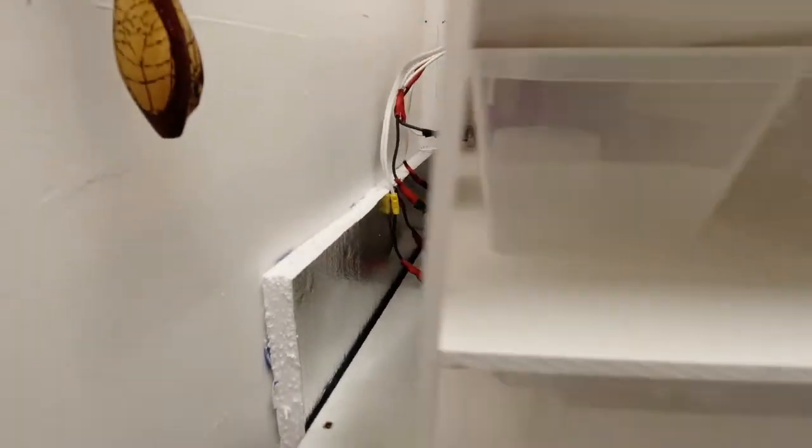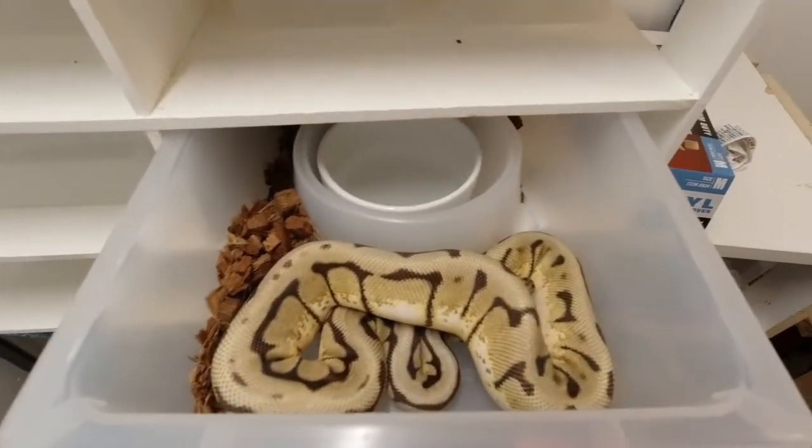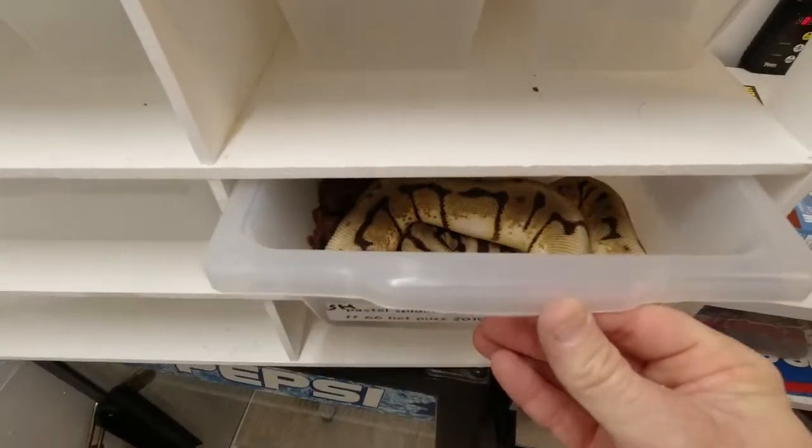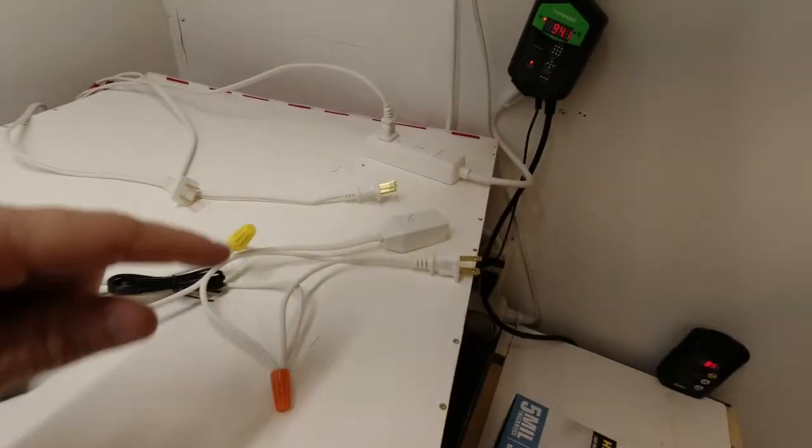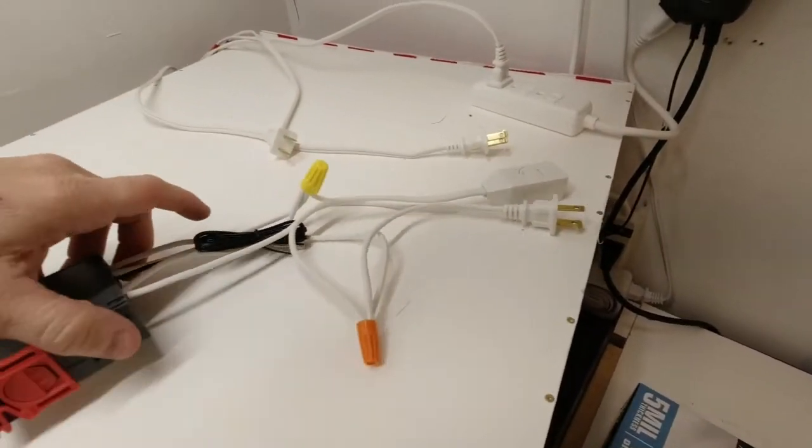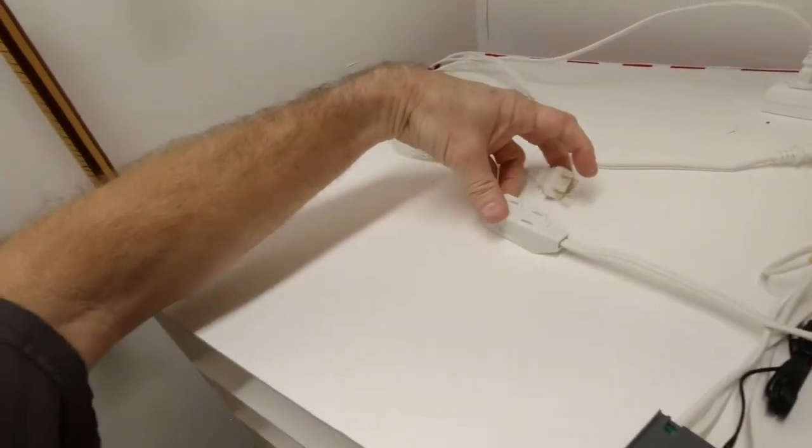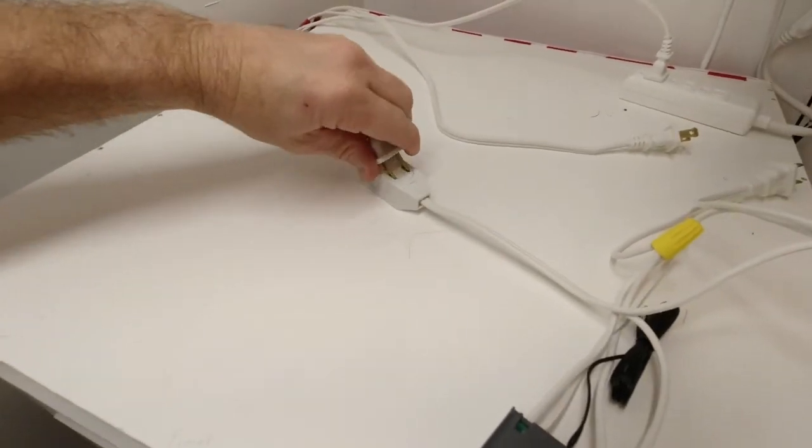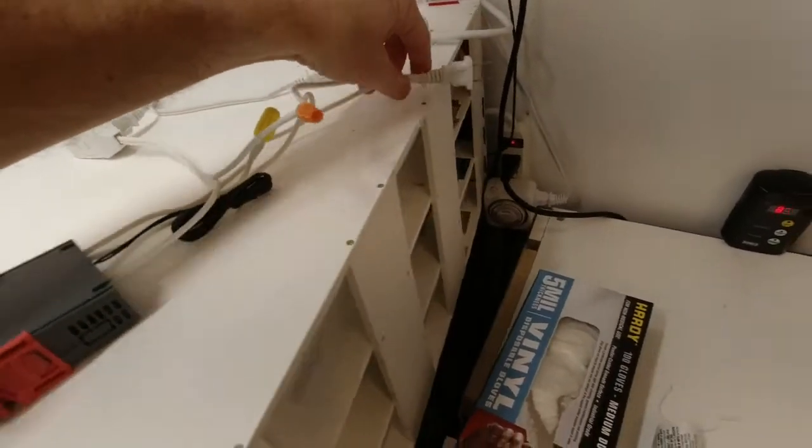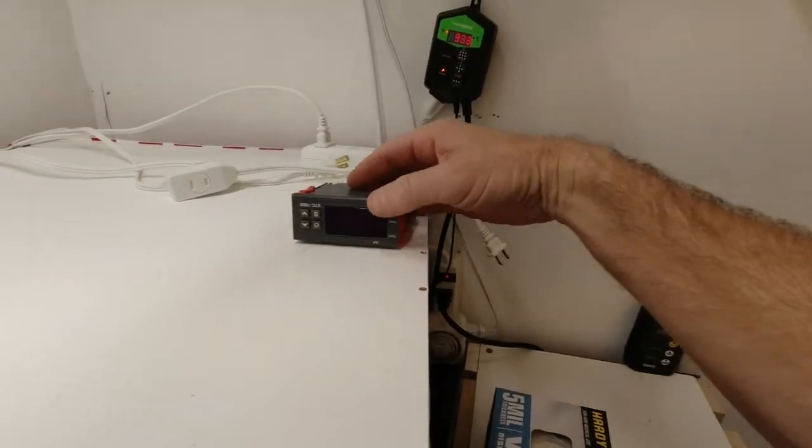And then plug those into whatever each source that way. If I don't want to use one of them, like right now I only have one snake in here and I'm only using that one rack. But what I would do is take each rack, plug one into each of these, and plug this into the wall.